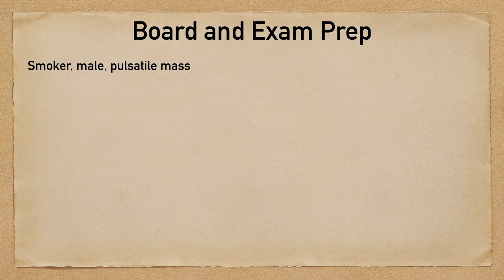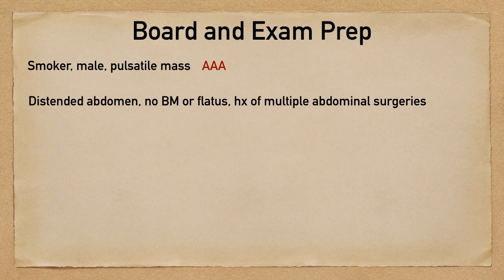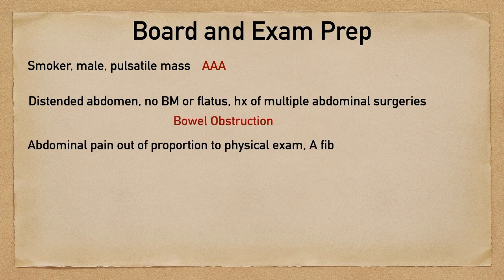If the patient is a smoker, they're a male, and you appreciate a pulsatile mass on examination, then they're going to be asking you about a triple A. If the question stem describes a distended abdomen, no bowel movements or flatus, and a history of multiple abdominal surgeries, then they're going to be asking you about bowel obstruction. If the patient has abdominal pain out of proportion to the examination, and maybe they have a history of AFib and they're not anticoagulated, then consider things like mesenteric ischemia.